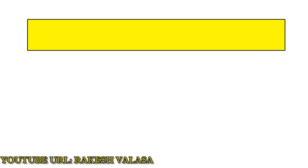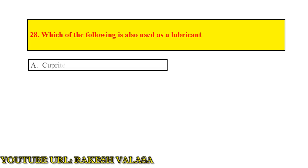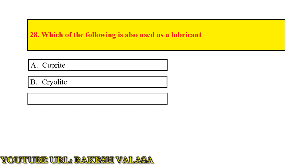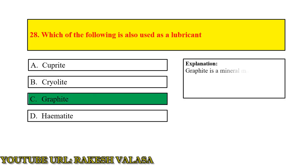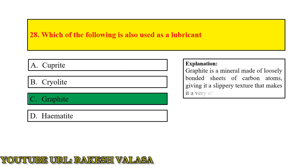Question number 28: Which one of the following is also used as a lubricant? — Answer: Graphite. Explanation: Graphite is a mineral made of loosely bonded sheets of carbon atoms, giving it a slippery texture that makes it a very effective lubricant.